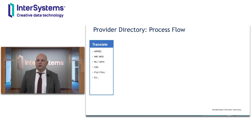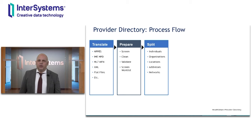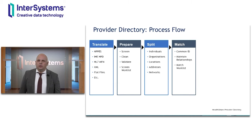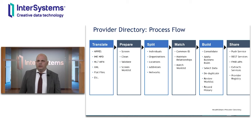Let's talk about the process that creates our directory. The first part is translation — Provider Directory can ingest inbound data from numerous sources, such as NPPES, HL7 master file messages, XML files, and others. Data is then prepared with several stages of curation to clean and validate information. Inbound data is categorized and split to make the building blocks of records for the directory. These records are matched and assigned a common ID so that relationships can be built and maintained. Ambiguous matches are placed on a work list. During the build phase, information is consolidated by applying data governance rules to build a single source of truth that can be shared through REST services, FHIR APIs, our push service, and extract service.